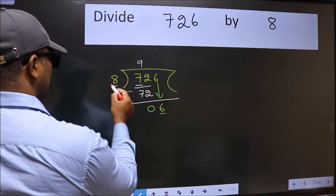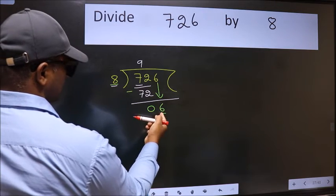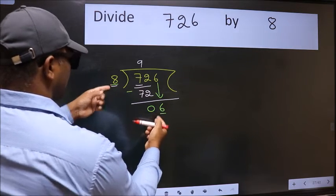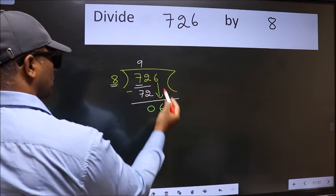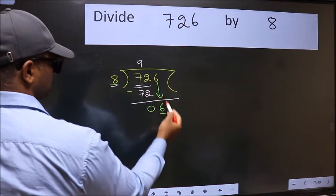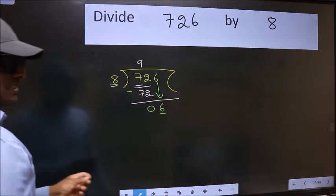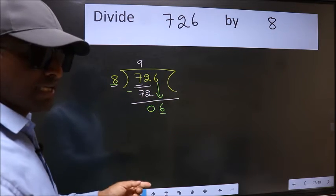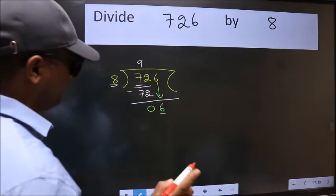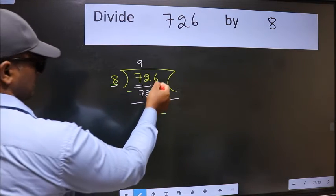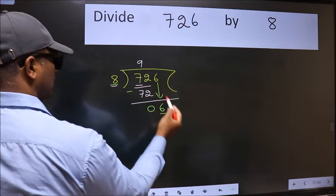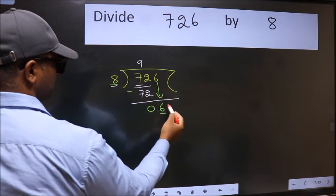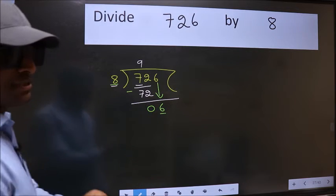Here we have 6 and here 8. 6 is smaller than 8. So what many do is they directly put dot, take 0, which is wrong. Why is it wrong? Because just now you brought this number down, and in the same step you want to put dot, take 0, which is wrong.